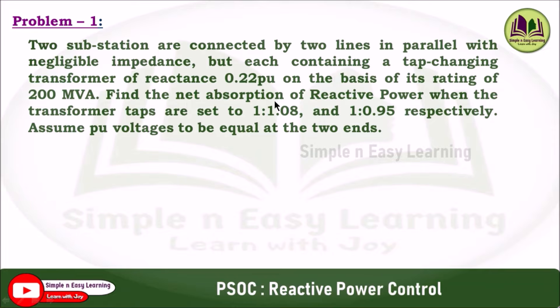Find the net absorption of reactive power when the transformer taps are set to 1:1.08 and 1:0.95 respectively. Assume per unit voltages to be equal at the two ends.